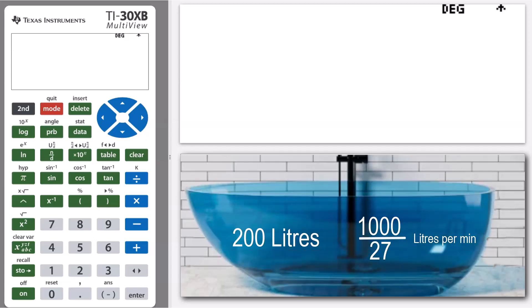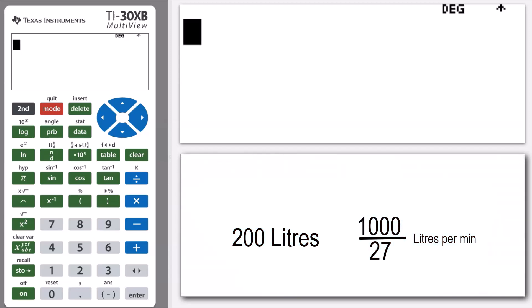So the linear equation that we're modeling is our volume equals 200 minus 1000 over 27 times X, where X is our time since the plug has been pulled out of the bath.